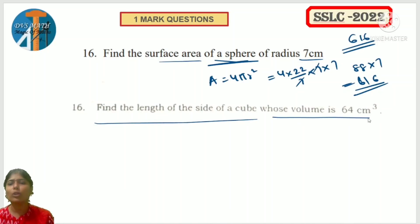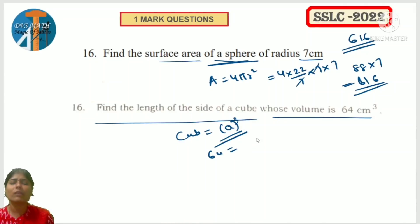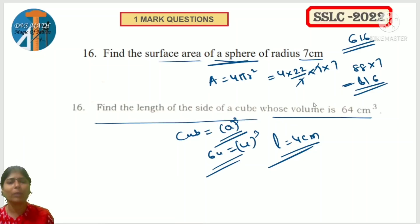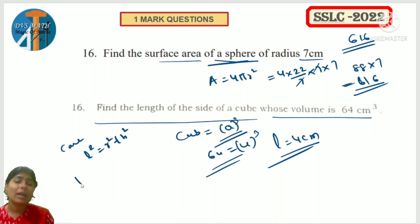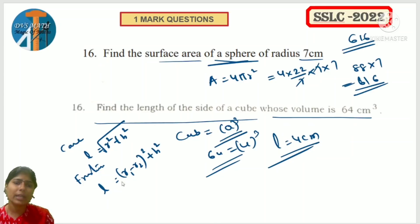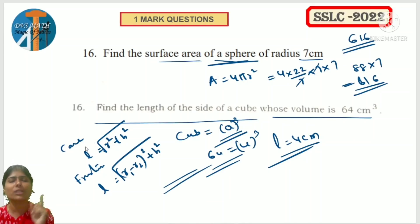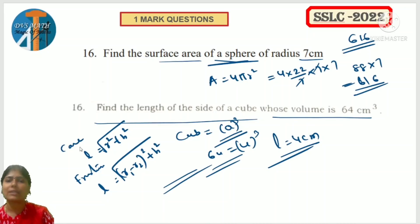Cube and cuboid questions are less common, but note them. For cone, the relation between slant height: L² = R² + H². For frustum, L² = (R1 - R2)² + H². If L is asked, take square root. This lesson openly gives 7 marks: 15th and 16th questions on surface area or volume - one formula question, one formula-based problem. Know all formulas completely. Easy one mark questions.